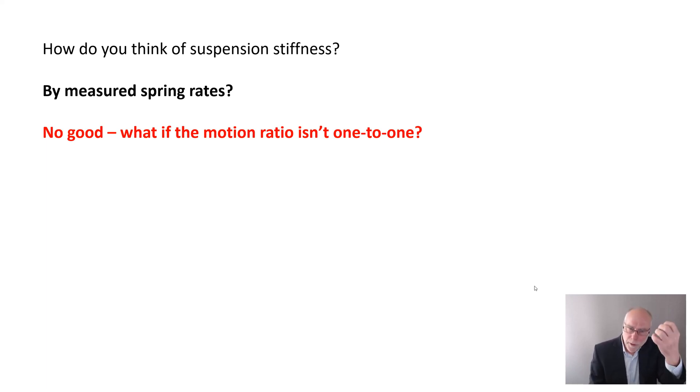Now, what do I mean by that? Think of a strut. Whether you've got a vertical spring or near vertical mounted very close to the wheel, the relationship between wheel movement in bounce and spring compression will be very close. If the wheel compresses upwards by six inches, the spring might compress upwards by 5.9. Very close. That's almost a one-to-one motion ratio.